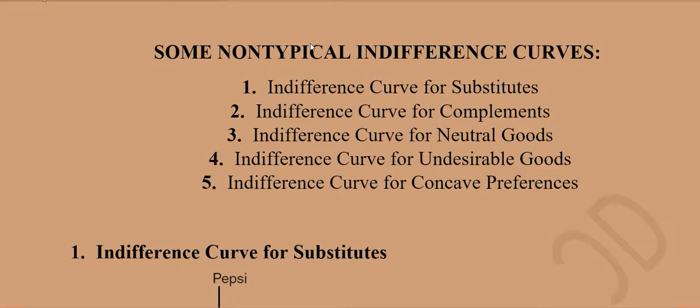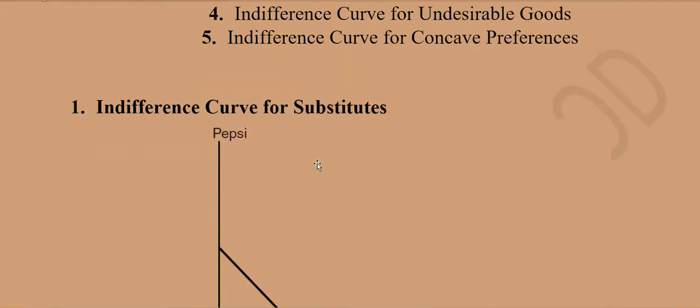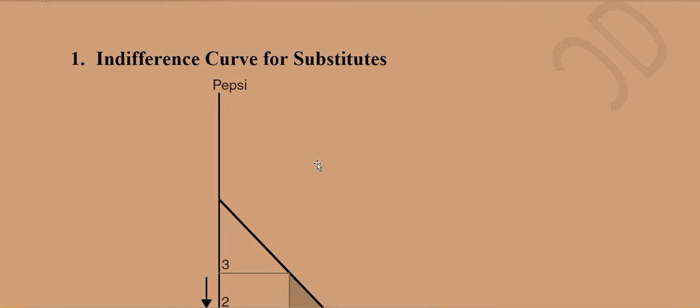In addition to the standard form of the indifference curve, which is convex to origin, we have a few cases that are a little unusual. Out of those, we have chosen five for explanation. Let's start with the first one.